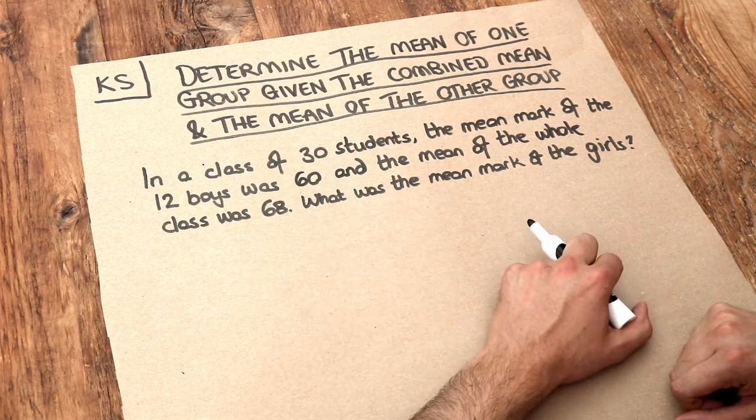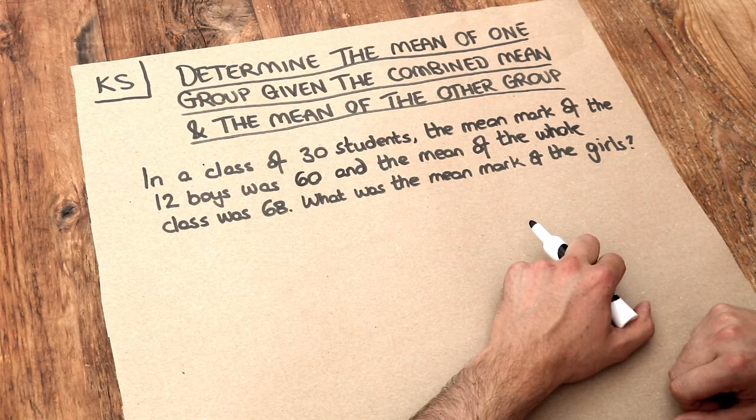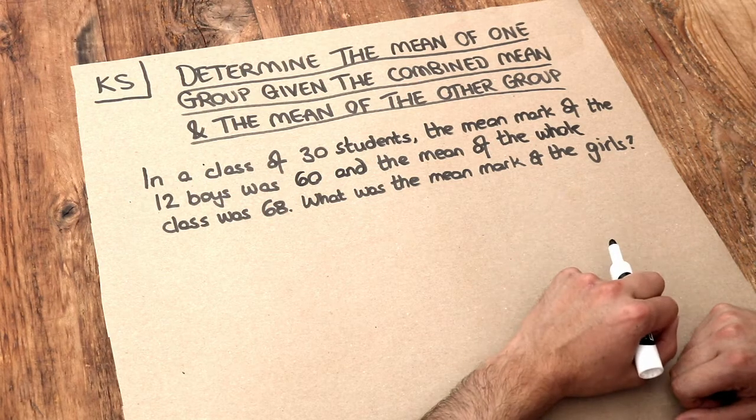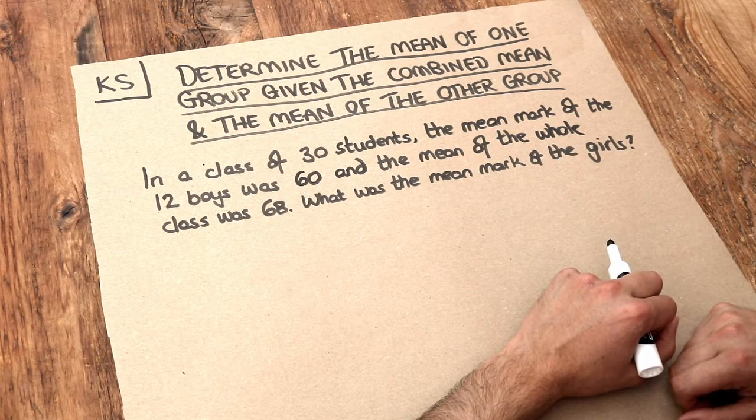In a class of 30 students, the mean mark of the 12 boys was 60 and the mean mark of the whole class was 68. What was the mean mark of the girls?